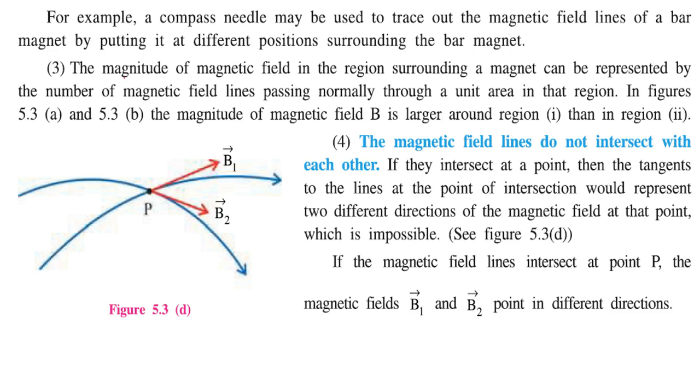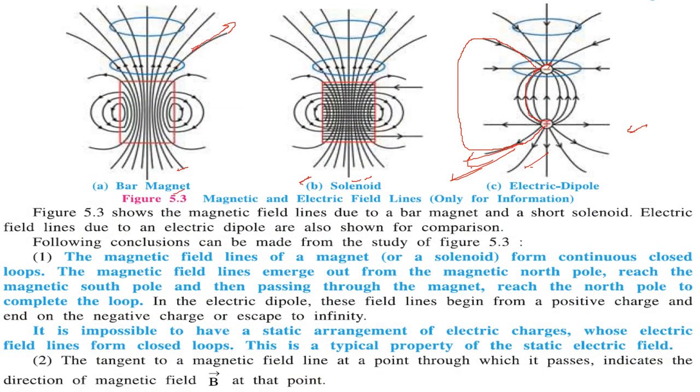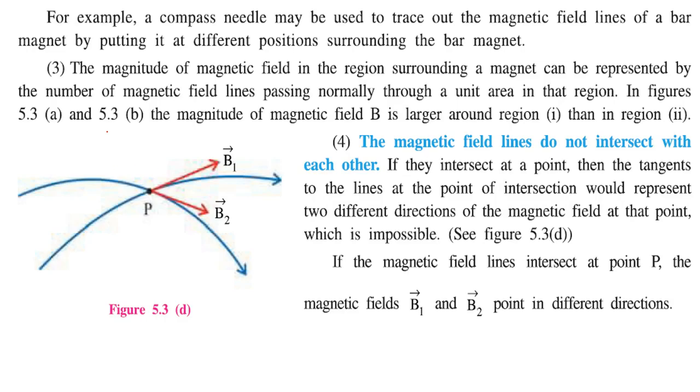The magnitude of magnetic field in the region surrounding a magnet can be represented by number of magnetic lines passing through a unit area in that region. The magnitude of magnetic field B is larger in the first region than the second region.